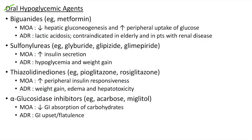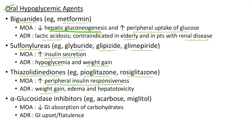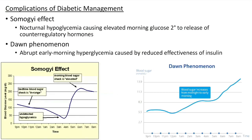Oral hypoglycemic agents: Biguanides (example: metformin) decrease hepatic gluconeogenesis and increase peripheral uptake of glucose. Side effects include lactic acidosis; contraindicated in elderly and patients with renal disease. Sulfonylureas (examples: glyburide, glipizide, glimepiride) increase insulin secretion; can cause hypoglycemia and weight gain. Thiazolidinediones (examples: pioglitazone, rosiglitazone) increase peripheral insulin responsiveness; can cause weight gain, edema and hepatotoxicity. Alpha-glucosidase inhibitors (examples: acarbose and miglitol) decrease gastrointestinal absorption of carbohydrates; can cause GI upset and flatulence.